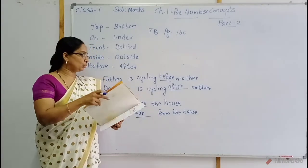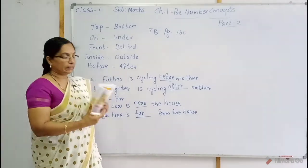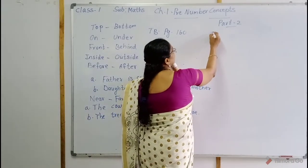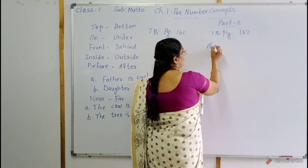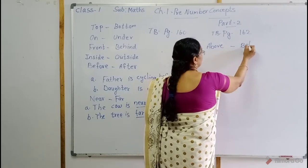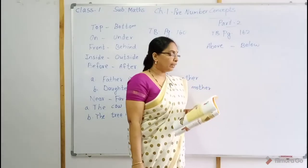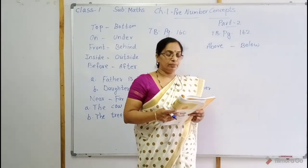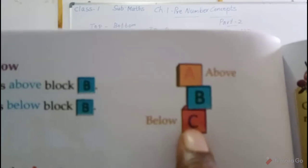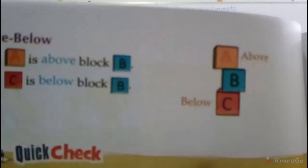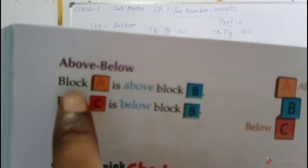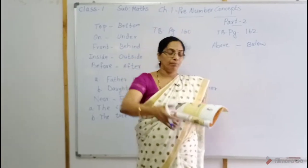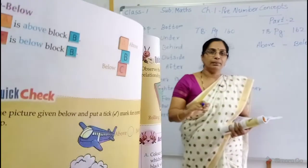Take page number 162. Here above and below. The next concept is above and below. You can see three blocks: block A, block B and block C. The middle is B block. The A block is above the B. C is below the B.